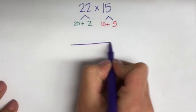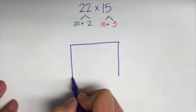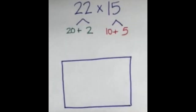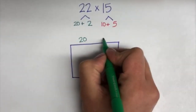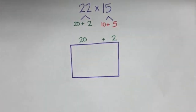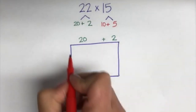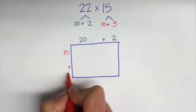Now we will go ahead and draw our rectangle for our area model representation below. Our next step will be to label the length and the width of our rectangle using our factors 22 and 15. I will start with 22 along the top as 20 plus 2, and on the side I will write 15 shown with 10 plus 5.